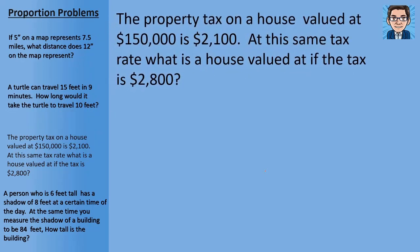All right, third problem, the property tax on a house valued at $150,000 is $2,100. At this same tax rate, what is a house valued at if the tax is $2,800? So let's set up our proportion. Let's put the value of the house on the top. And let's put the tax on the bottom. So then $150,000 over the tax for that one is $2,100. And that's set equal to, we don't know the value. That's what we're trying to find. So that's where our unknown is. But we do know the tax is $2,800.